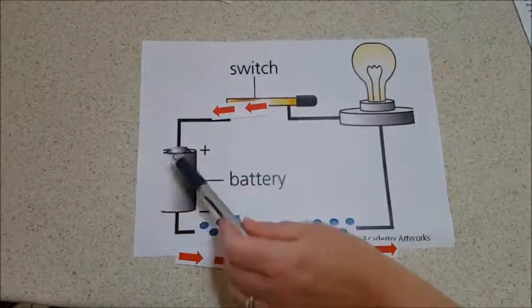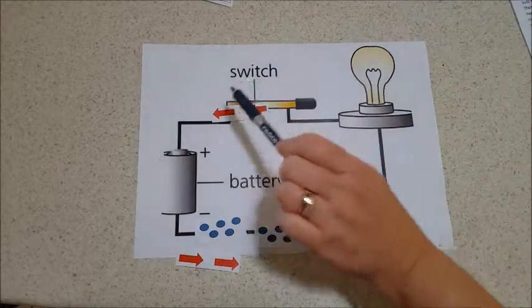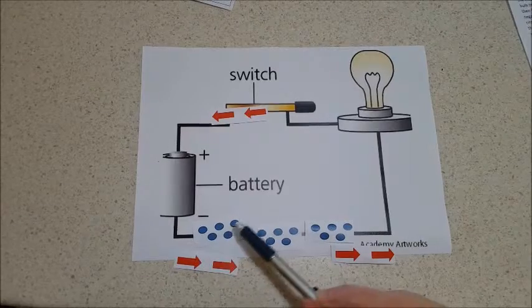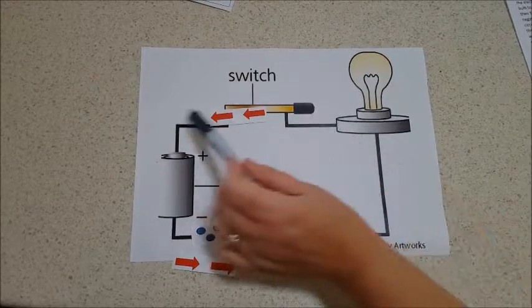It enters the battery and the cycle begins again. The negative side of the battery feeds new electrons into the circuit to maintain the flow.